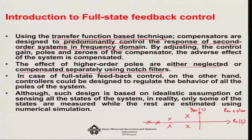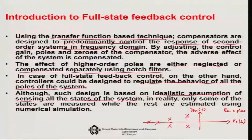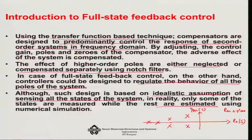However, in full state feedback control, we actually regulate the behavior of all the poles of the system — we do not neglect any. Although such design is based on the idealistic assumption that you can sense all the states of the system, in reality you cannot sense all states, so some states are estimated. An observer is designed separately to ensure that estimation is good enough so that the virtually estimated states can be used just like regular states and the full state feedback control model remains intact.